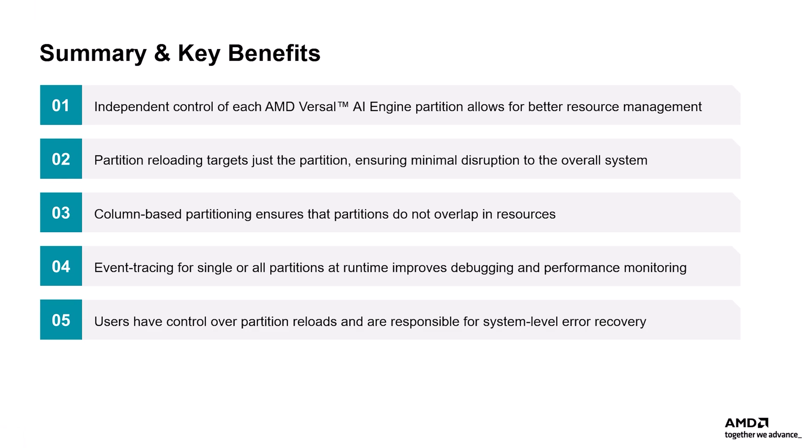Here is the summary of key benefits of enabling independent control and optimized management of AI Engine partitions through AMD VITAS Unified Software Platform. AMD VITAS 2025.1 allows independent control of AI Engine partitions, improving resource management and isolation. Partition reloading impacts only the targeted partition, minimizing system disruption and enhancing uptime. Performance is optimized through column-based partitioning, avoiding resource overlap for stable operation. Users have full control over partition reloads and error recovery, allowing tailored system optimization. Debugging tools like VITAS Analyzer provide detailed insights at the partition level. The system is scalable and designed to support more complex applications in the future, ensuring flexibility, control, and performance for developers. That wraps up this video. Thank you.